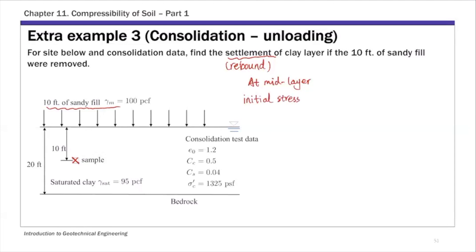This initial stress is with that 10 feet of sandy fill on top. Remember, we're calculating the change in stress — the settlement due to removing the sandy fill. So the initial state is with that sandy fill. The initial stress sigma-naught-prime should include 10 feet of moist sand gamma-moist, plus 10 feet of saturated clay — 10 feet of gamma-saturated minus gamma-water.